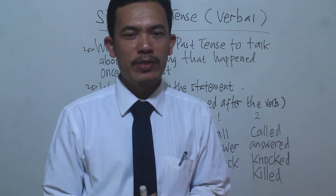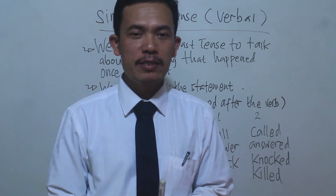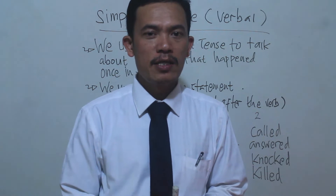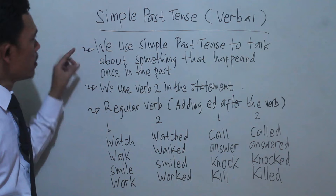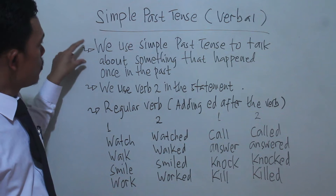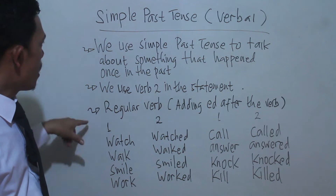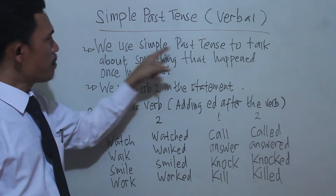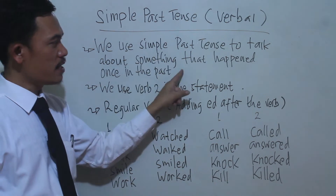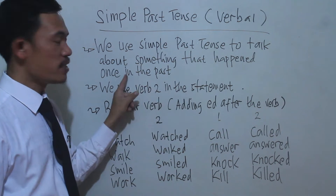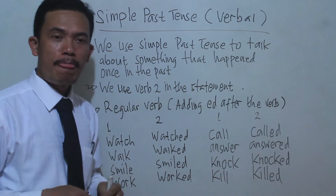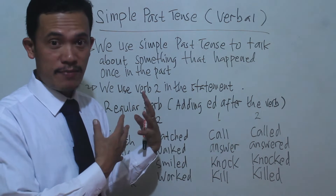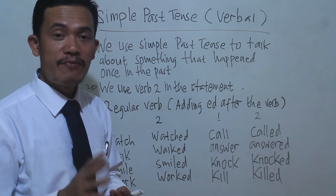Today we're going to discuss how to use simple past tense using verbal sentences. Let's pay attention to these items. The first use of simple past tense is to talk about something that happened once in the past. When you are talking about past activities, we have to use verb 2.